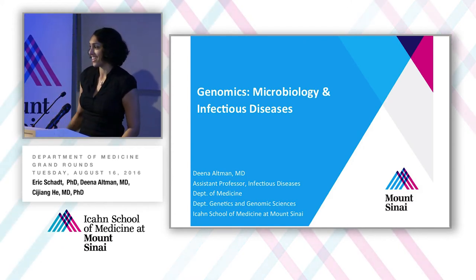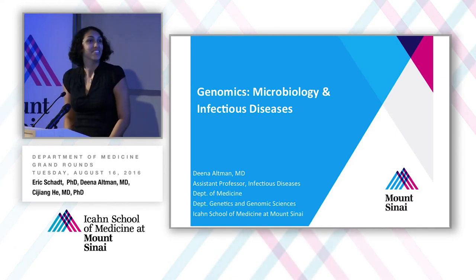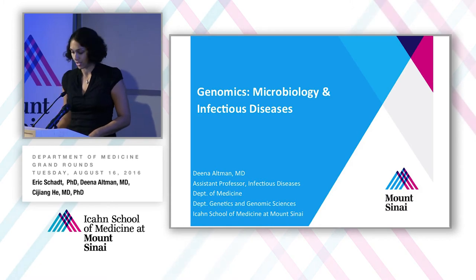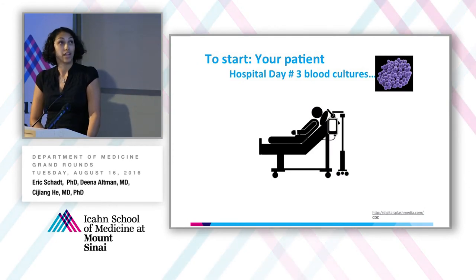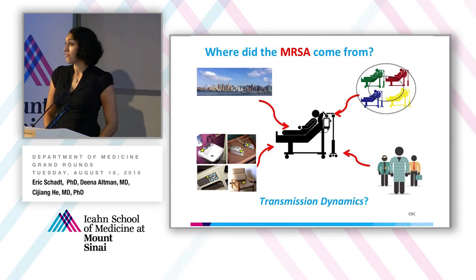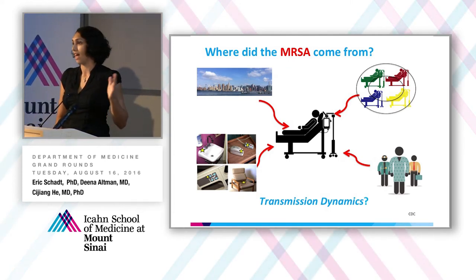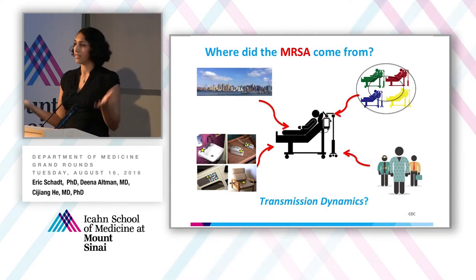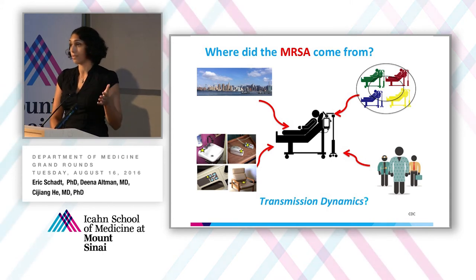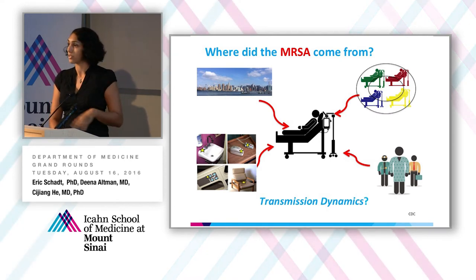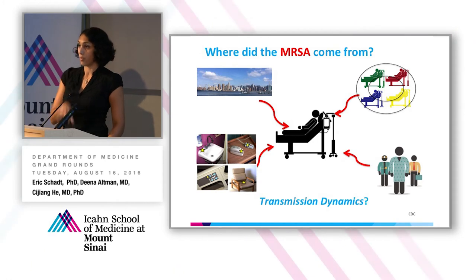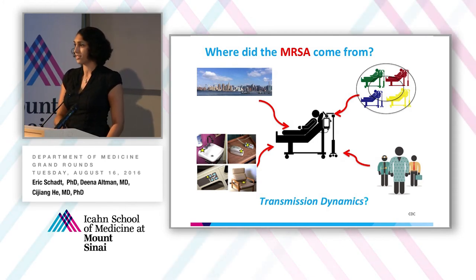Thank you so much for inviting me here today. I will go a little deeper into infectious diseases and applications of genomics. I'd like to begin with your patient who, on hospital day three, develops fevers, you draw blood cultures, and those blood cultures reveal MRSA. You may be wondering: where did this MRSA come from? Did it come from the patient's community, gym, pets? Did it come from other patients in the hospital? Hospital surfaces? The patient's providers? What are the transmission dynamics of this pathogen? And if multiple patients in your ward have MRSA in the bloodstream — are these the same MRSA? Are they different?